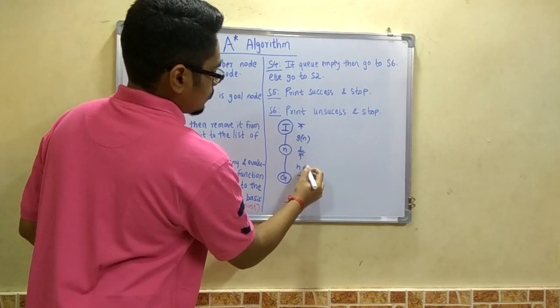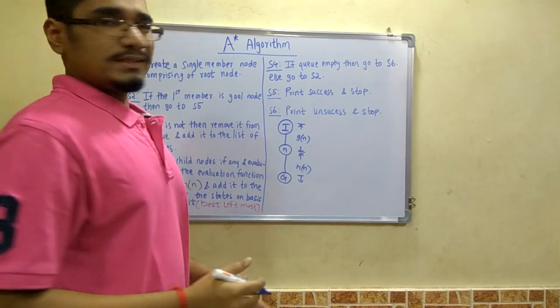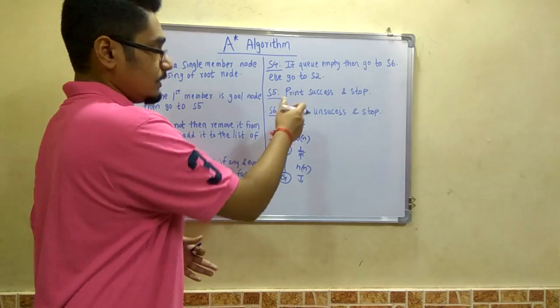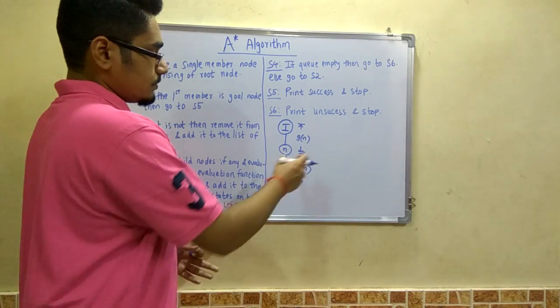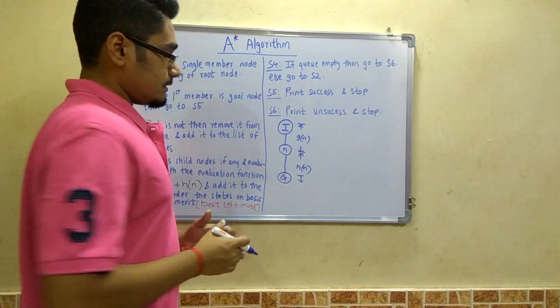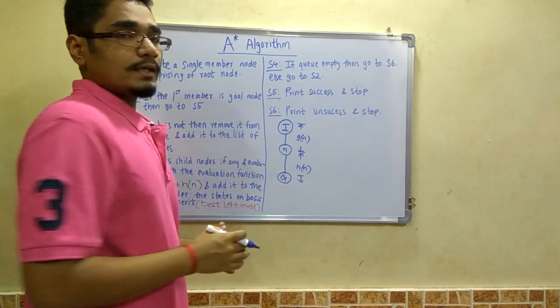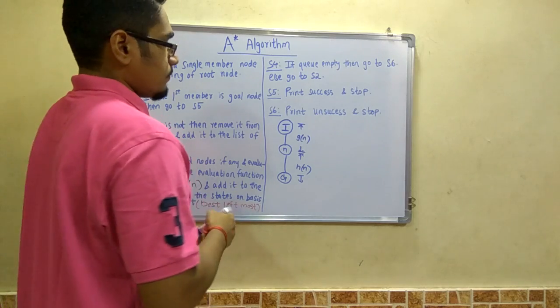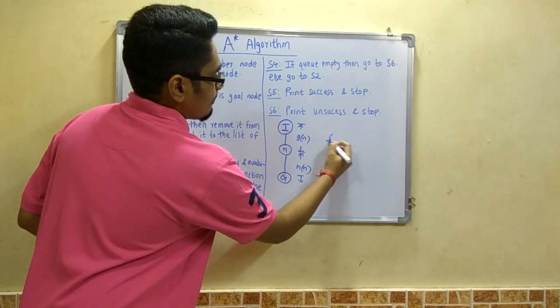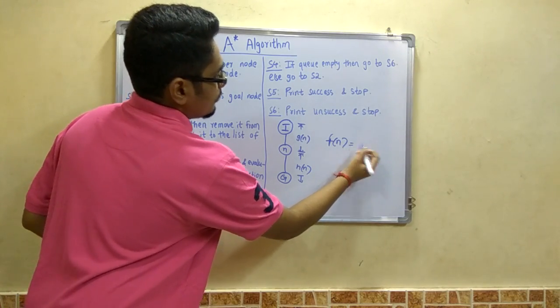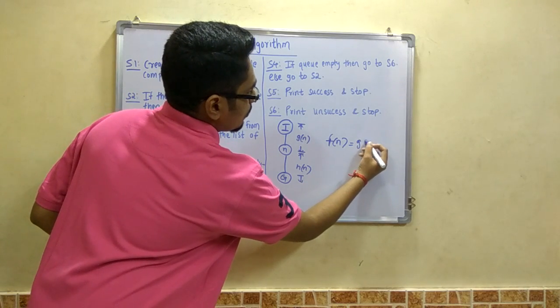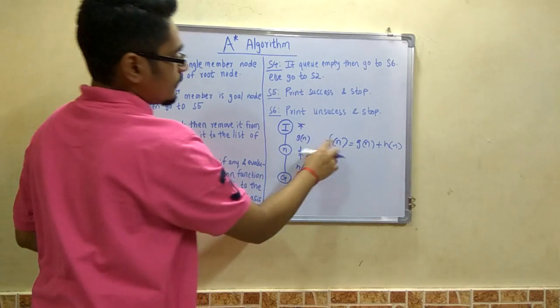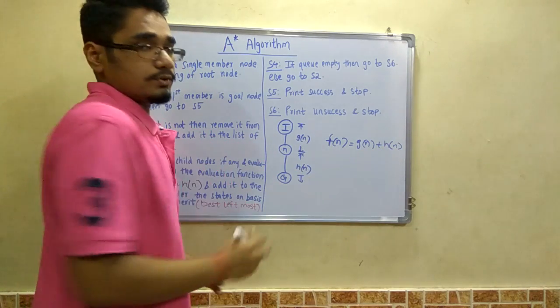So G is the distance from the initial state to N, and H is the heuristic distance from the goal state to state N. We can solve this problem by evaluating the function F = G + H, where G is this distance and H is this distance.